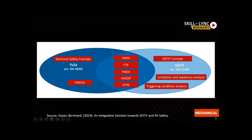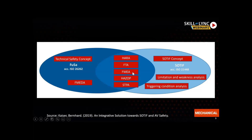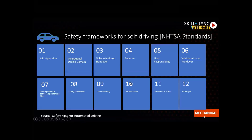Before ISO 26262, there was ISO 21448. These are the two main safety standards: FUSA means functional safety, and SOTIF means safety of the intended function. At the intersection, there are safety analysis methods including HARA (hazard and risk assessment), fault tree analysis, failure mode and effect analysis, HAZOP, and others.